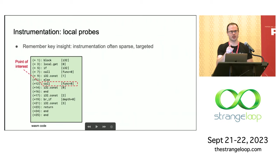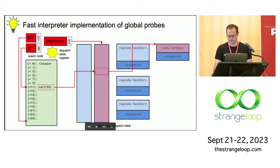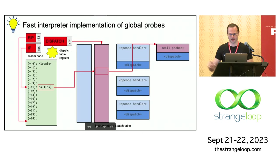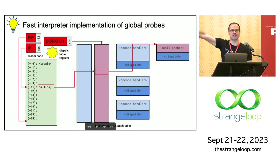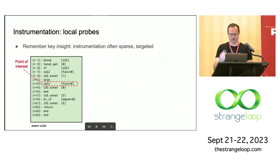In answer to a question: the global probe would be literally every single bytecode regardless of its opcode class. But there is a trick that will do it per opcode class too — if you just modify the dispatch table entry for a particular class of opcode. But the global probe is for every dynamically executed bytecode.